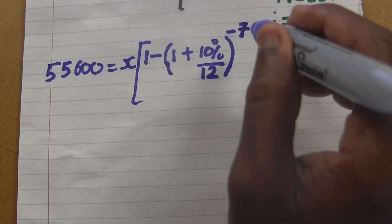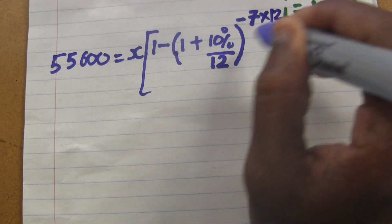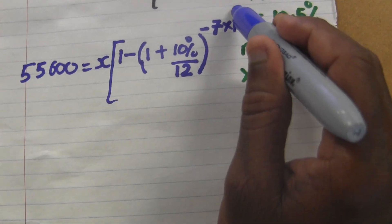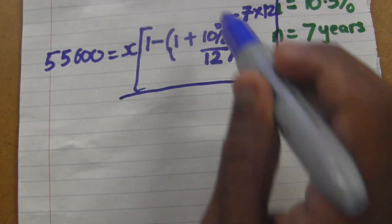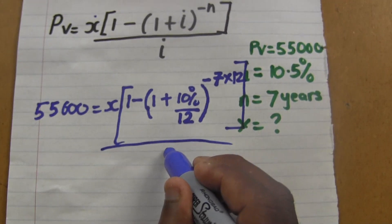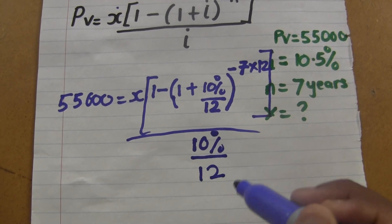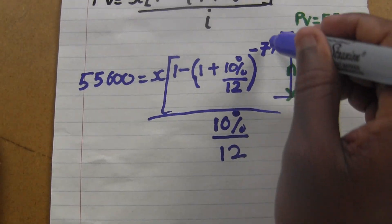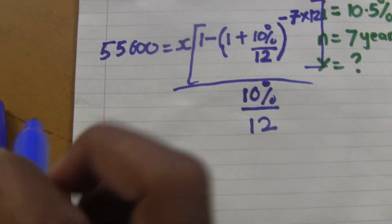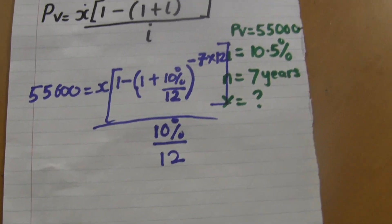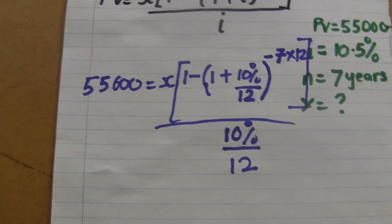The time is seven years, so that's negative seven, and you multiply by 12 as well — the same number it was compounded by. Then close the bracket and divide by the interest rate, which is 10% divided by 12. I'll find the whole value of this bracket first using my calculator.